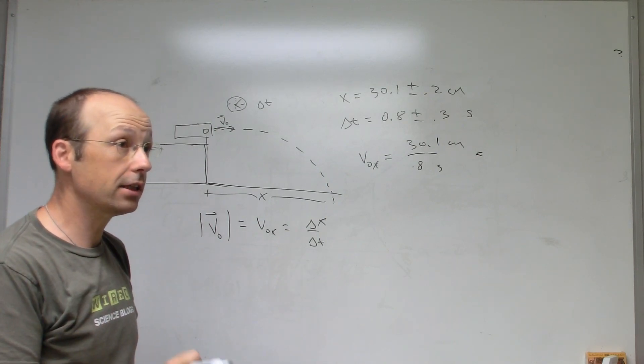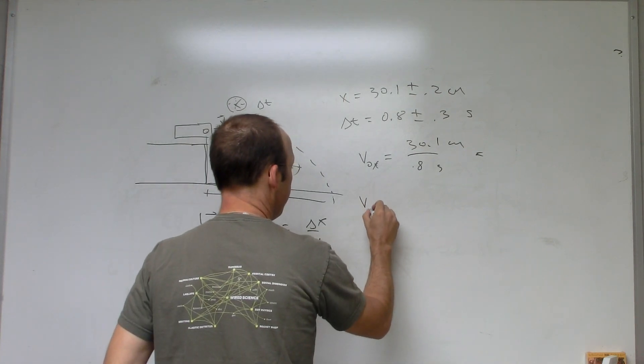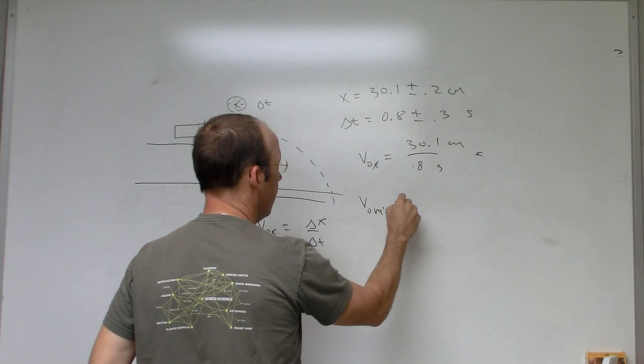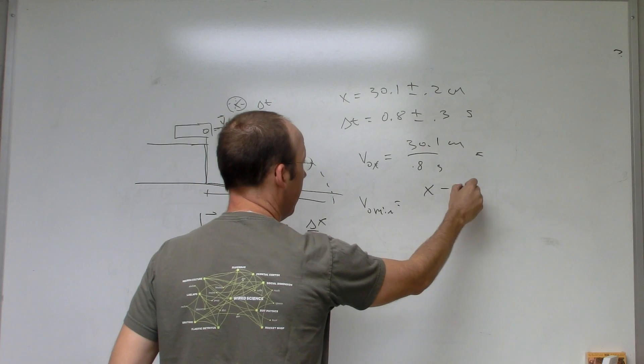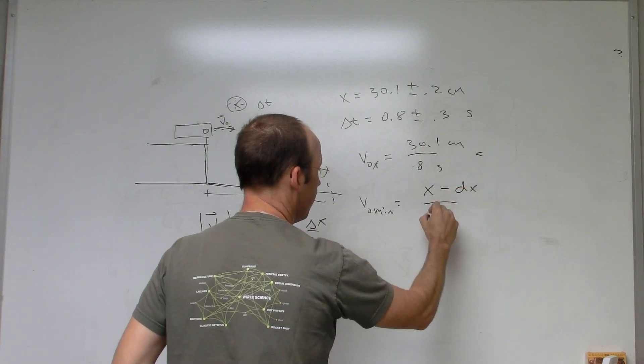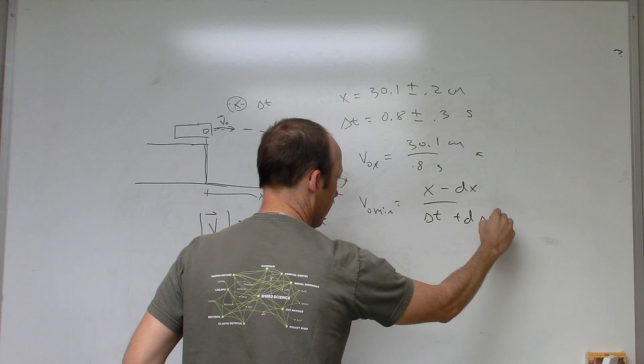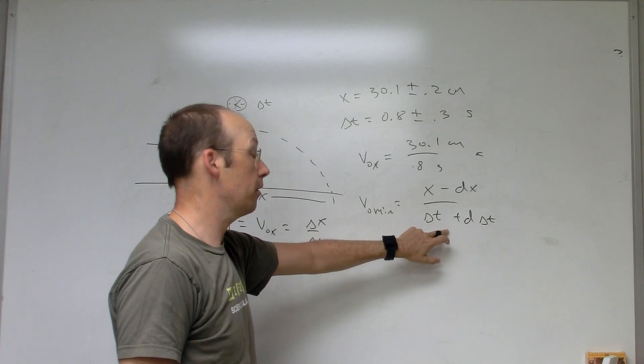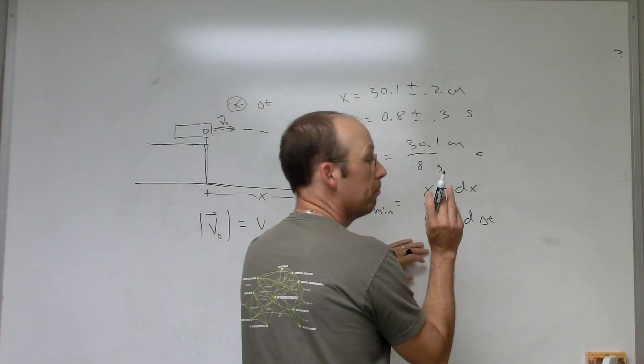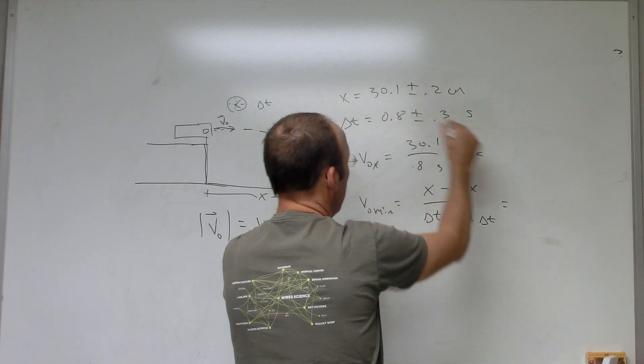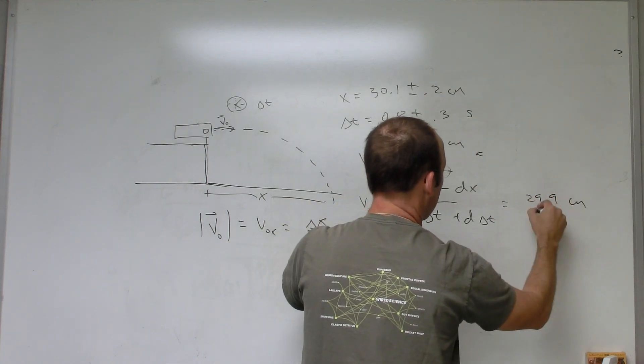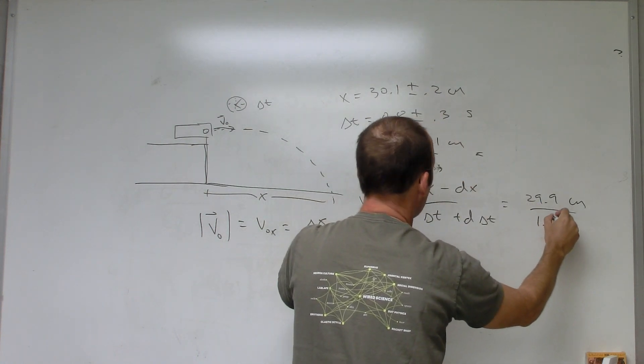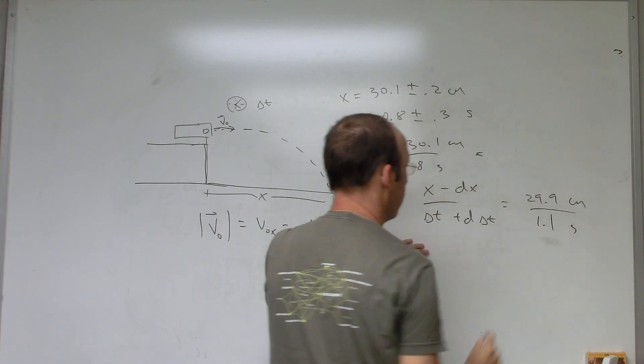Now to calculate uncertainty I need to calculate the minimum velocity and then the maximum velocity. So v0 minimum, I'll leave off the x since there's no y, v0 minimum is going to be x minus DX over Delta T plus D Delta T. So I have the smallest number on the top and the biggest number on the bottom. This is going to be 29.9 centimeters, that's 30.1 minus 0.2, and then I have 0.8 plus 0.3, so 1.1, and that's my minimum velocity.